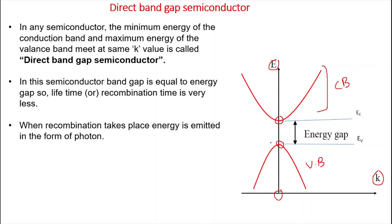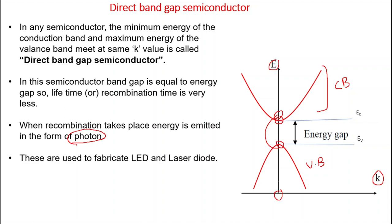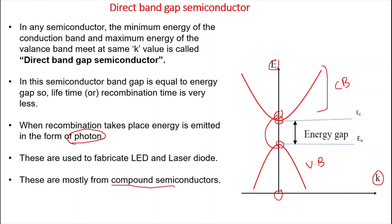When recombination takes place — meaning if an electron jumps from the valence band to the conduction band or an electron combines with a hole — energy gets emitted in the form of a photon, that is in the form of light. Because of this reason, direct bandgap semiconductors are used in the fabrication of LEDs and laser diodes.